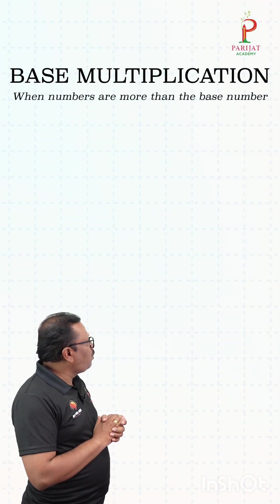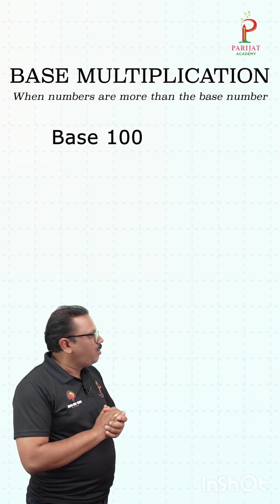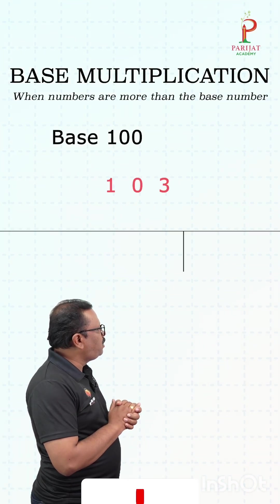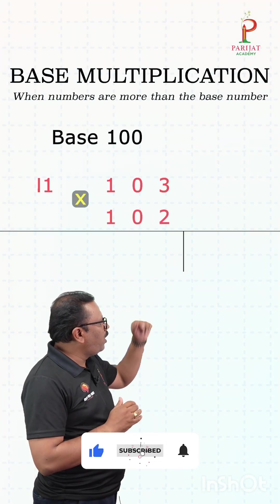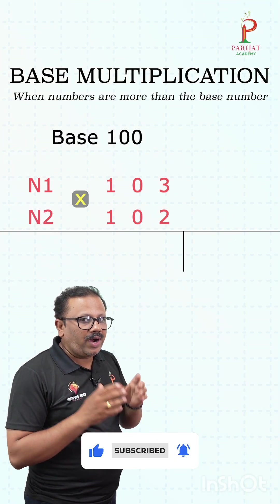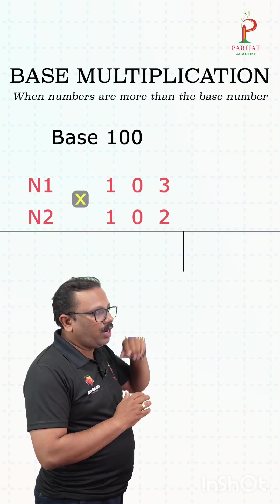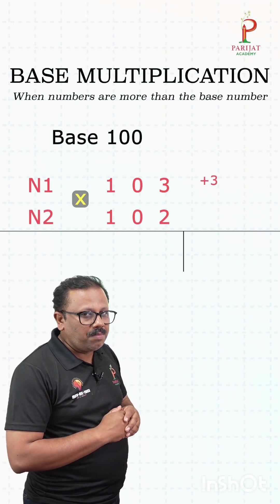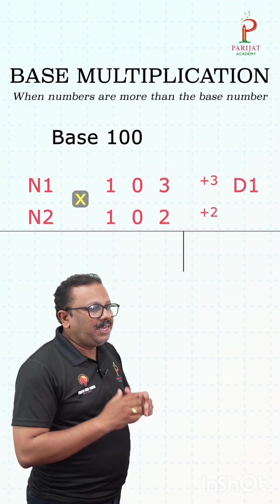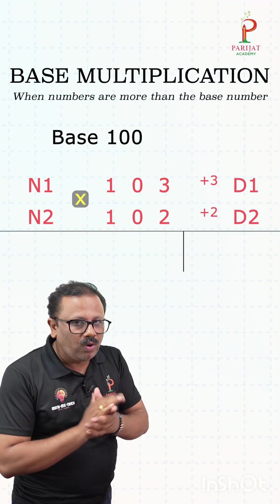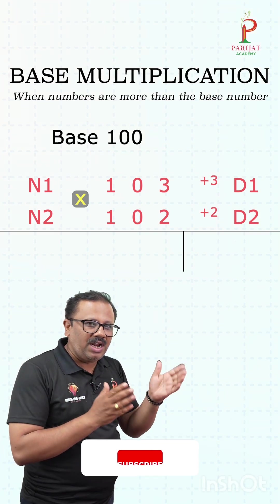Now let's go with base 100. Suppose we have to multiply 103 times 102. Again, number 1 and number 2. We have to find the deviation — that means the difference between 100 and each number, which gives us plus 3 and plus 2. That is d1 and d2.